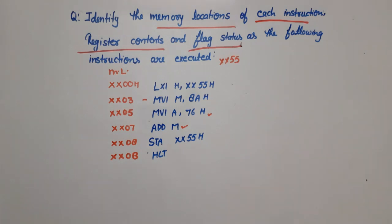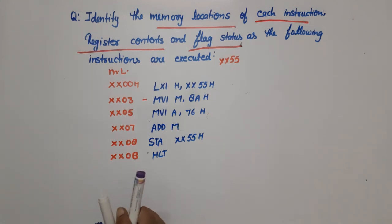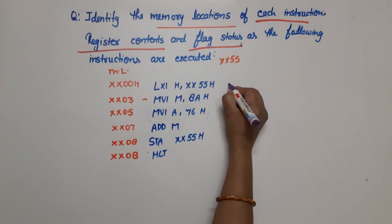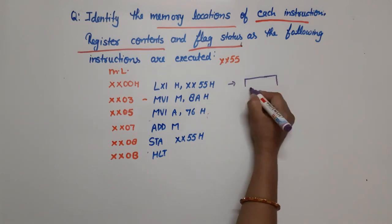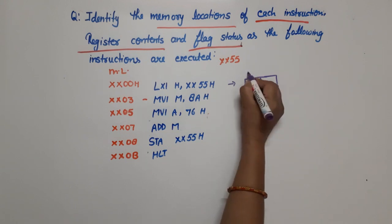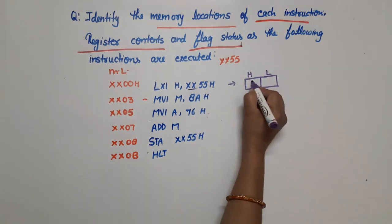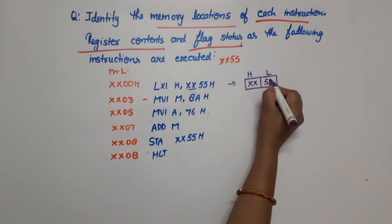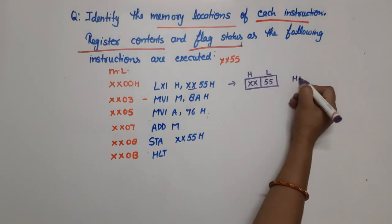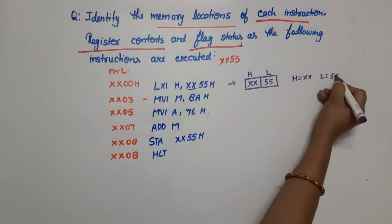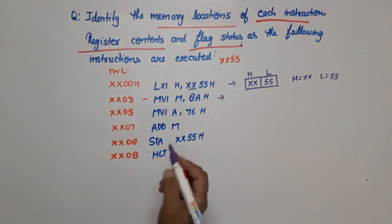The first part — memory locations — is done. Now we find the register contents. We know this when we understand the instruction meaning. LXI H means load immediate data into the HL pair. So as this instruction executes, the immediate data in the instruction loads into H and L: the H register gets the high byte value and L register gets 55H.